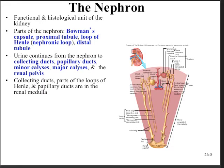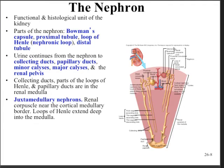The collecting ducts and parts of the loops of Henle and the papillary ducts lie entirely in the medulla. The juxtamedullary nephrons, which make up about 15% of the total nephrons in each kidney, have the job primarily of establishing the salt gradient in the medulla, which is critical in adjusting the volume of urine as it passes through the collecting duct. The remaining 85% are cortical nephrons, primarily there for detoxification purposes. The main difference between the two is the length of the loops of Henle and the arrangement of peritubular capillaries — termed vasa recta in juxtamedullary nephrons.